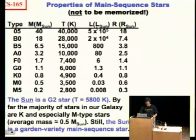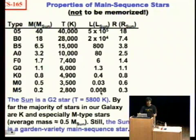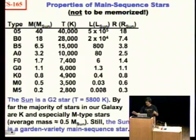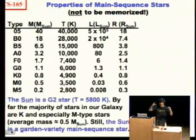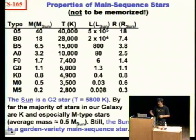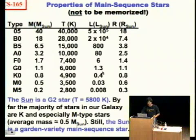But look at the luminosity — holy cow. They go from half a million solar luminosities to one one-hundredth or so. The luminosity spans a much bigger range because it is proportional to the square of the radius and to the fourth power of the temperature.